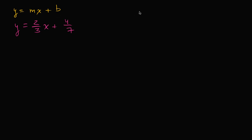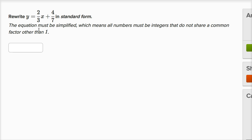But we want to write this in standard form, which would be the form Ax plus By equals C. And that extra text there we're saying, the equation must be simplified, which means all numbers must be integers that do not share a common factor other than one.